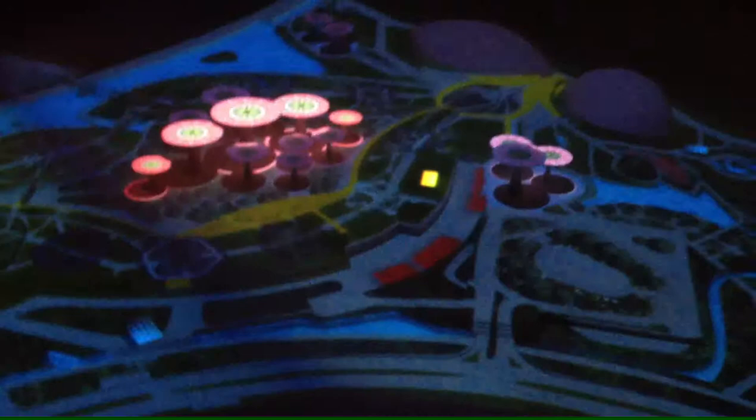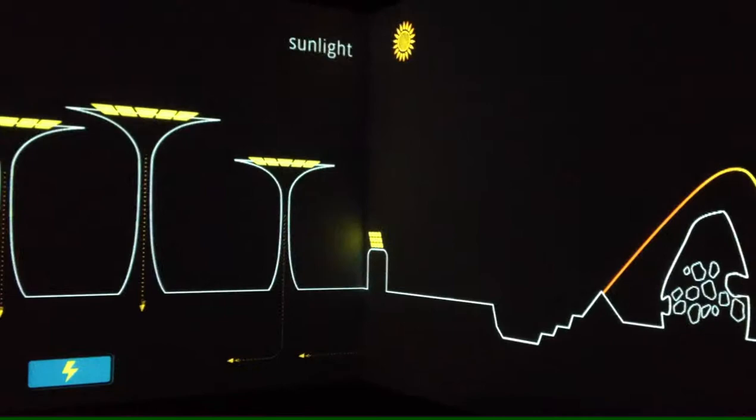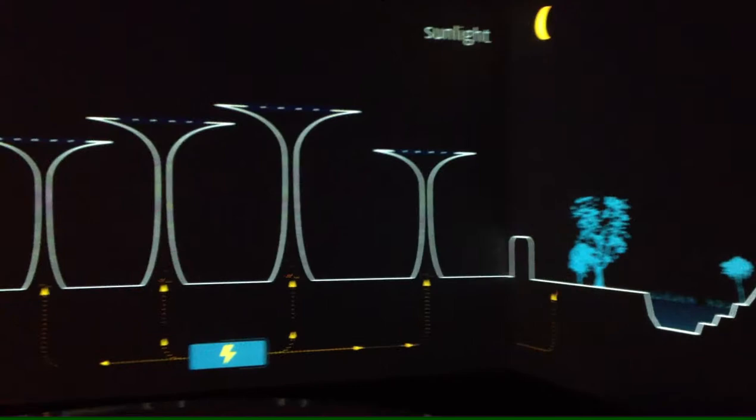Whilst trees in nature collect energy with their leaves, our super trees use solar cells. This clean green technology generates more than 99.7 kilowatt peak during the day. That's enough energy to light up the super trees.